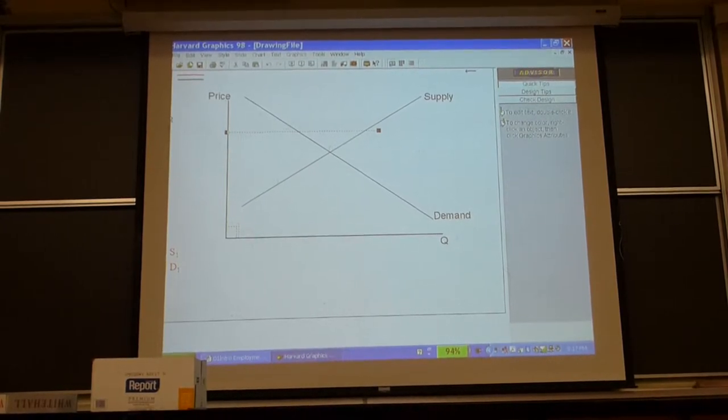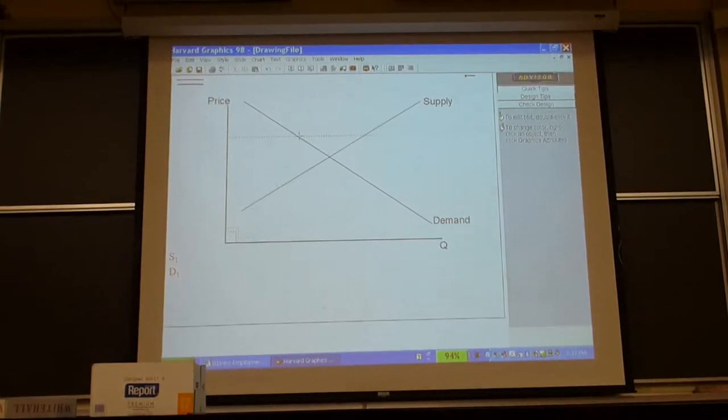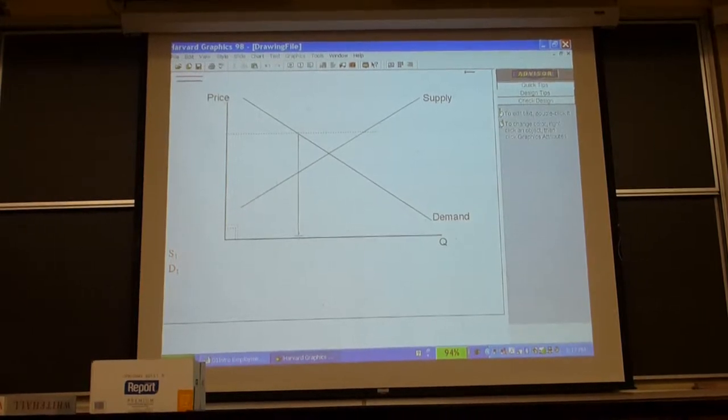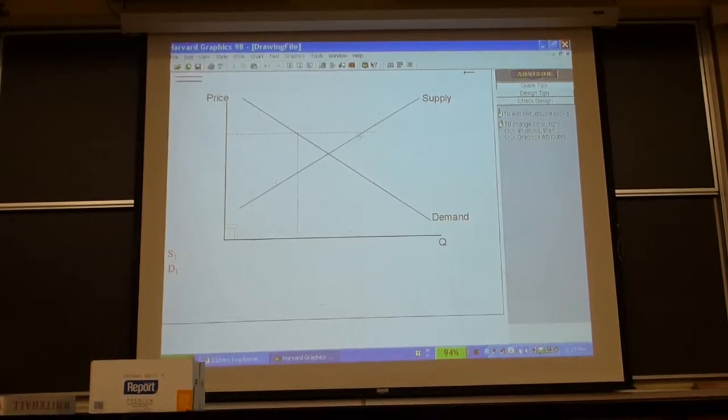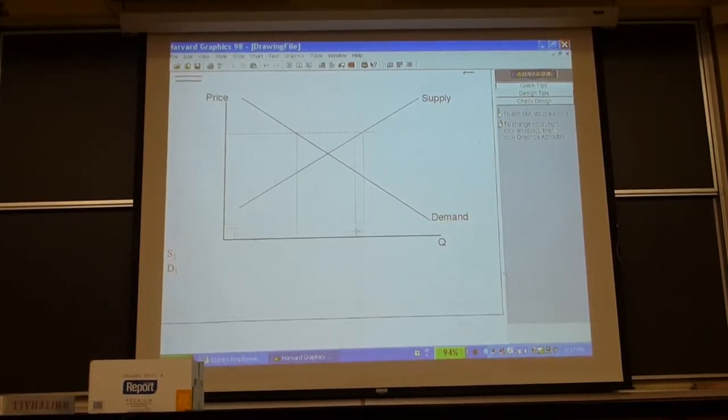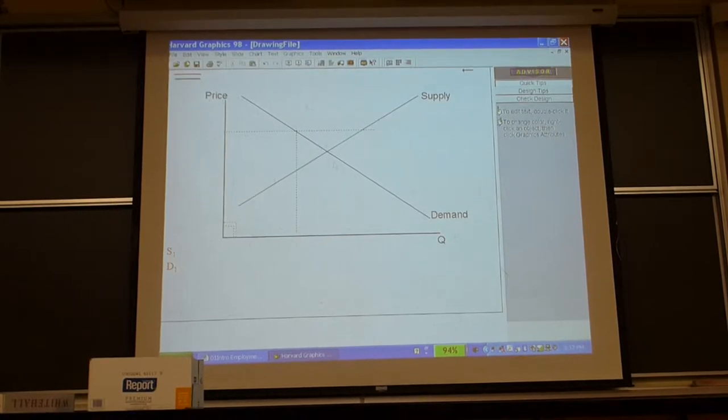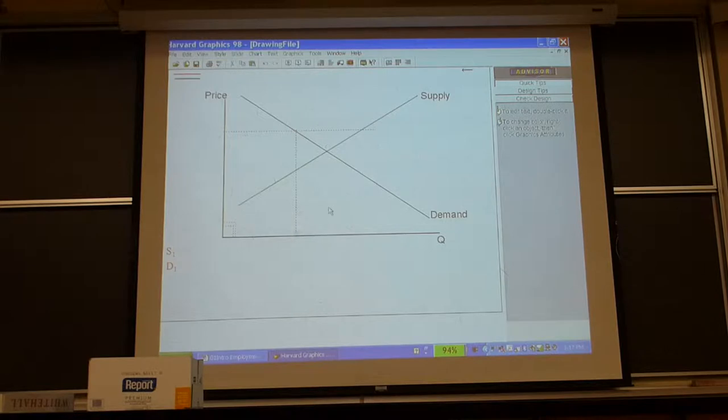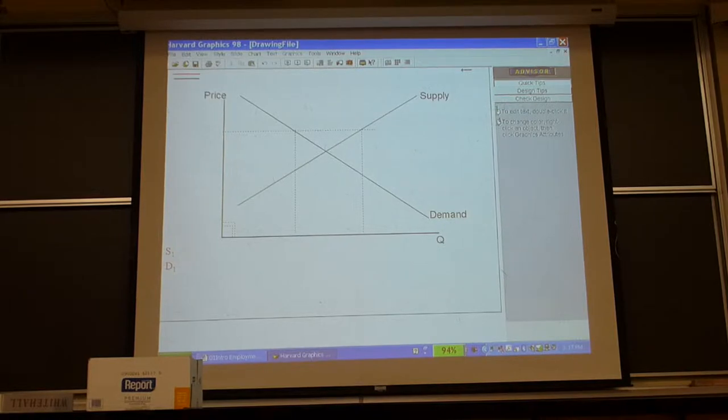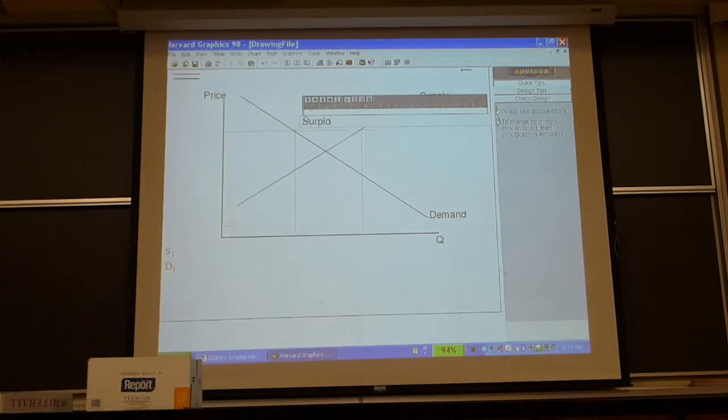If there is a surplus of goods here, this is a surplus of goods, quantity demand and greater supply, the price falls.